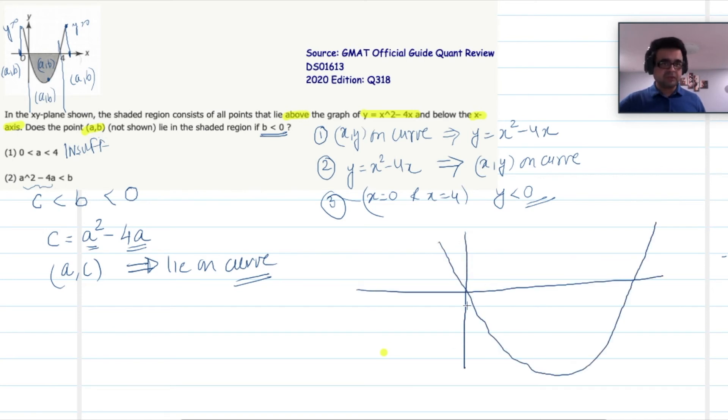What I am given is this curve. And what I have figured out is that this point (a,c) would lie on the curve. Where could it lie? Here, here, here, here, here, anywhere, right? Nothing is given at least at this point.